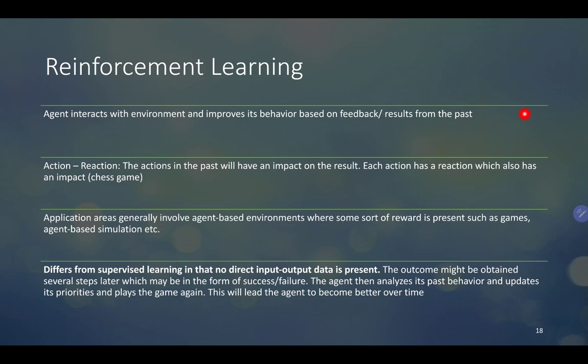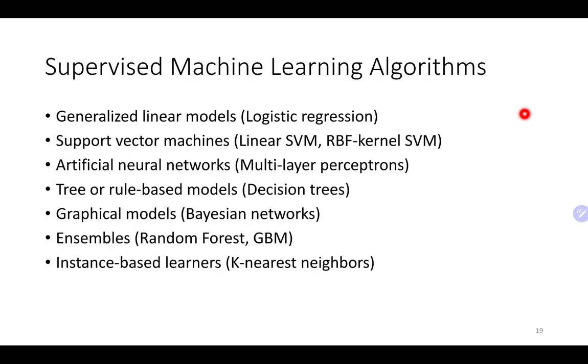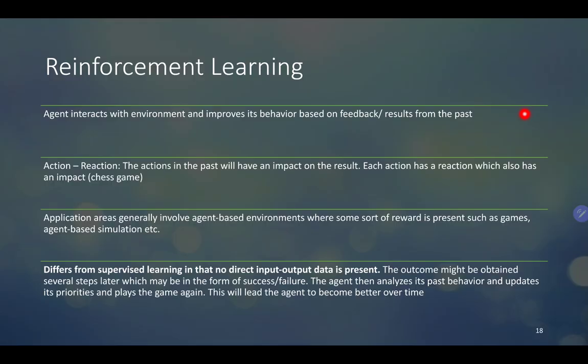In reinforcement learning, there are agents with different actions, reactions, and outputs. There is a state. Based on all the interactions between these components, there is either a punishment or a reward at the end, and then the reinforcement model learns to improve its behaviors.